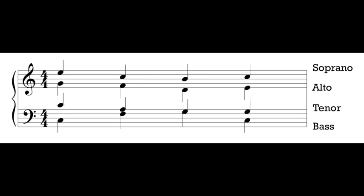This is also how we're going to do a lot of our writing. We're going to write on the grand staff with treble clef and bass clef, two parts on each staff, and we're going to split our stems outward. Our soprano part has stems up and our alto part has stems down; our tenor part has stems up and our bass part has stems down.